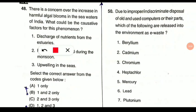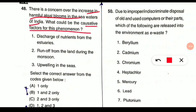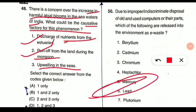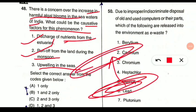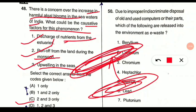Question 48: There is concern over harmful algal blooms in the seawaters of India. What are the causative factors? First, discharge of nutrients from estuaries causes algal bloom. Second, runoff from land during monsoon carries nutrients, also causing algal bloom. Third, upwelling in seas — when bottom seawater rises to the surface, carrying nutrients — also promotes algal growth. All three (1, 2, and 3) are causative factors, so option D is correct.